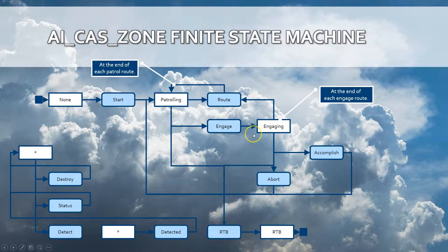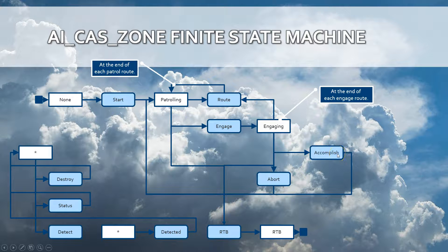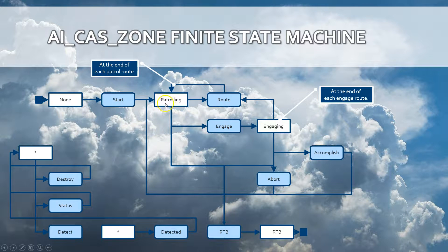The CAS process is not automatically accomplished — that's important. It needs to be told that it is accomplished by an external party, for example a FAC (forward air controller) or a human player who can say the job is done. You need to call the 'accomplish' event when you want to tell the AI that the close air support task is done. Once you do that, the AI will fly back to the patrol zone and the AI CAS Zone will return to the 'patrolling' state.